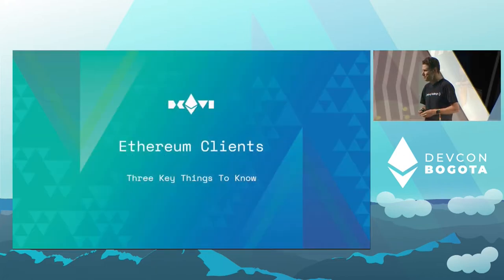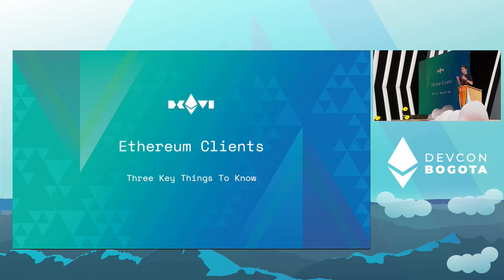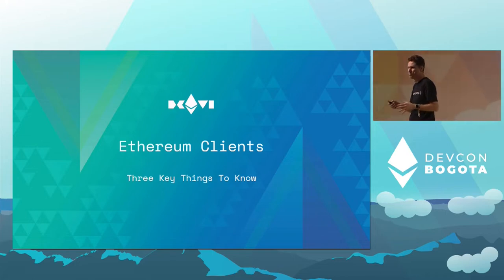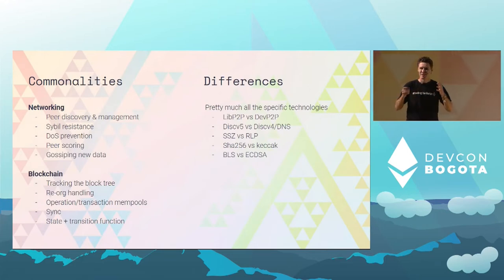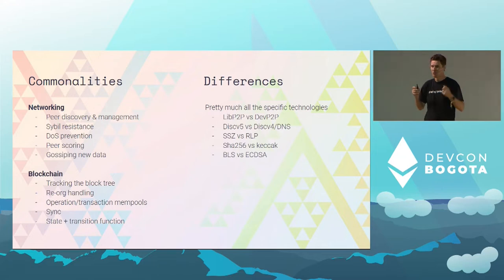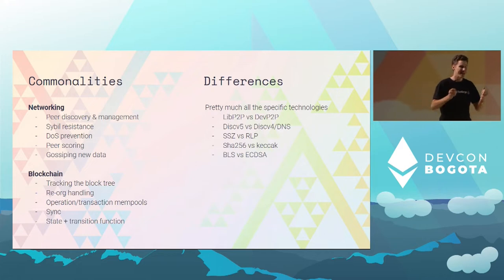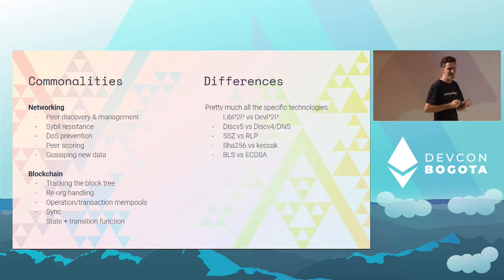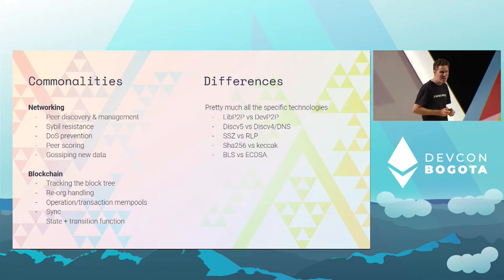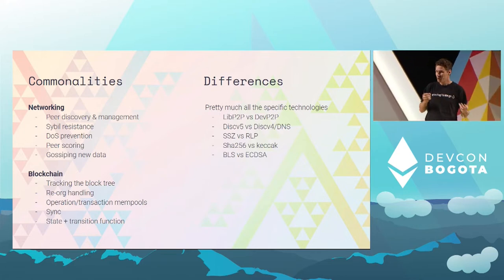To give you some background, there are three key things I want you to know about Ethereum clients. The first is that there is a lot less difference between consensus clients and execution clients than most people believe. Yes, they do quite different jobs. At every opportunity when we were designing the beacon chain, we said we can do that better, let's pick a different technology. So there's basically no shared code between the two.